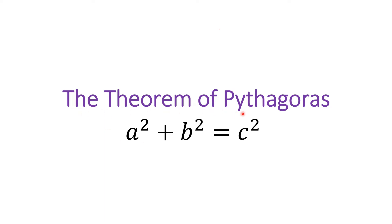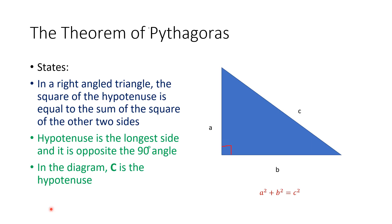Today's lesson is on the theorem of Pythagoras. The theorem of Pythagoras states: in a right angle triangle, the square of the hypotenuse is equal to the sum of the squares on the other two sides.